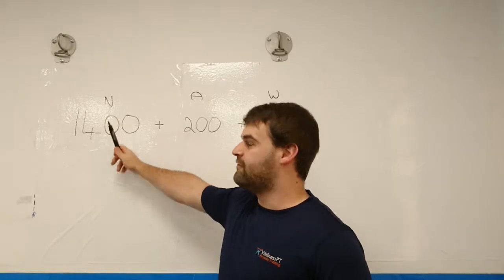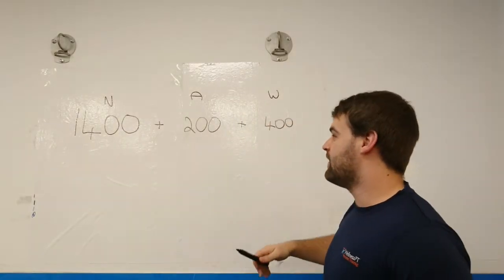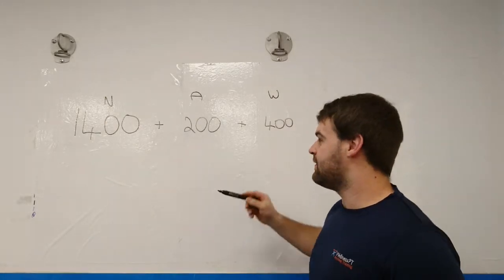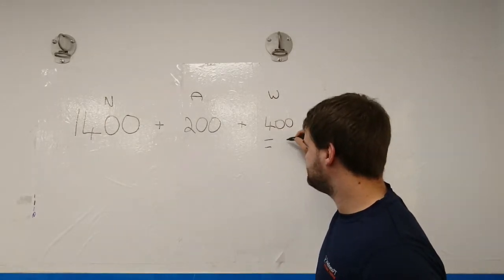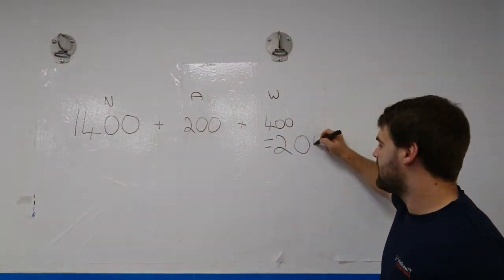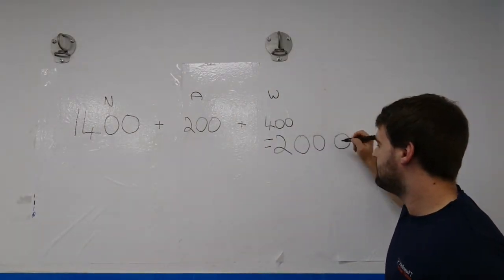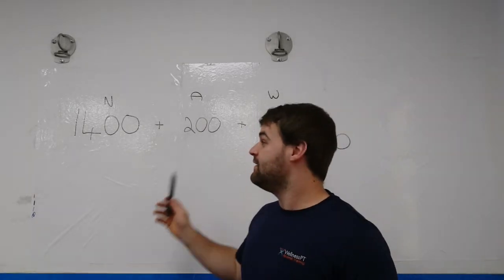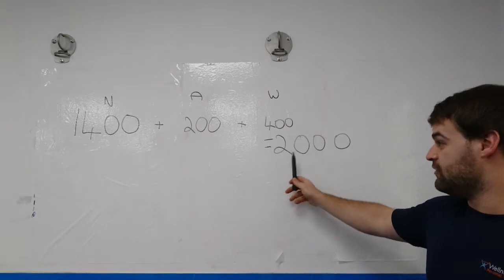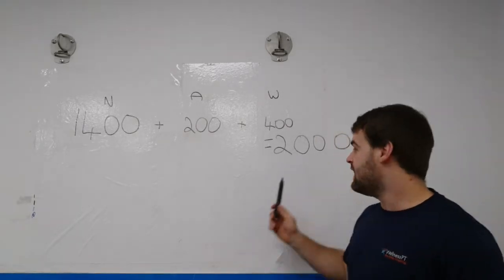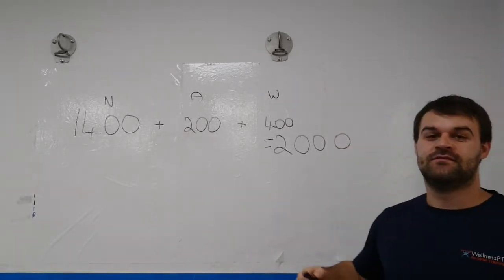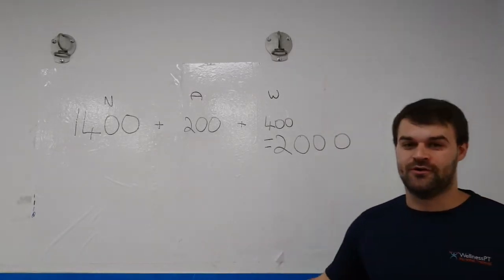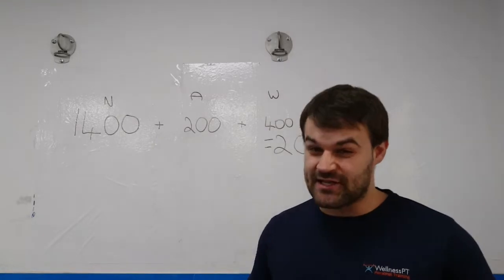So add all these up: 1400 from your natural, 200 from your activity, 400 from your workouts, and then you are burning 2000 calories each day. Very simple. So now if you do all this and you eat 2000 calories you'll stay the same. If you eat more than this you're gaining weight, if you eat less than this you will lose weight.